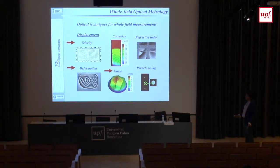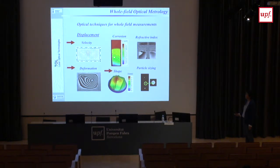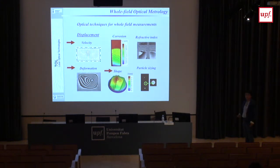If it is a solid rather than a fluid, we get deformation — in-plane or out-of-plane deformation. We can also measure shape, surface corrosion in the range of micrometers, refraction index when two liquids are mixing, and particle sizing.